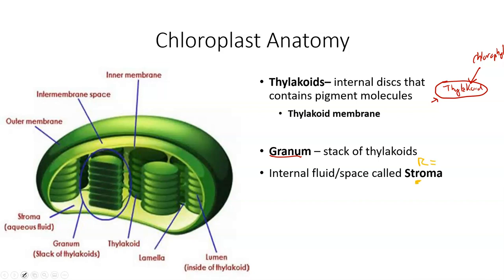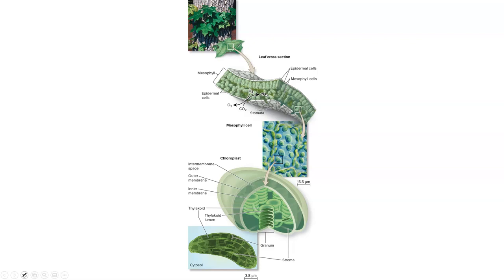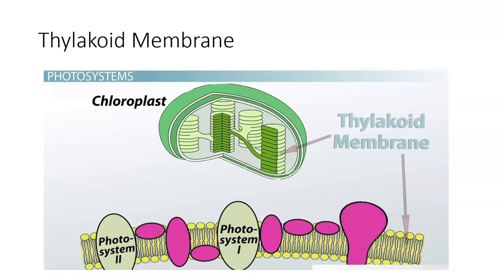Stroma looks a lot like stoma, so don't get them confused — stroma has that extra 'r.' I like to think the 'r' stands for 'room,' so the inside of the chloroplast has some room to it. To summarize the structure: starting from the outside we have our stomata, which are pores on the leaf. Zoom in and you find the chloroplast, which is made up of thylakoids, granums, and the stroma as the inner fluid.